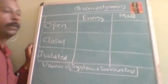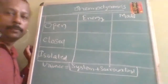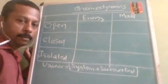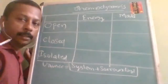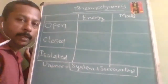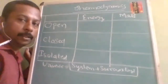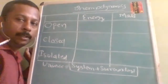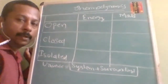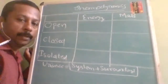Now listen carefully. In thermodynamics, we are going to use certain words, and the meanings of those words in this chapter will be different from their meanings in other places. That's why the context meaning, the internal meaning of that word, is limited to this chapter only. Word meanings change here when you use them in other places.